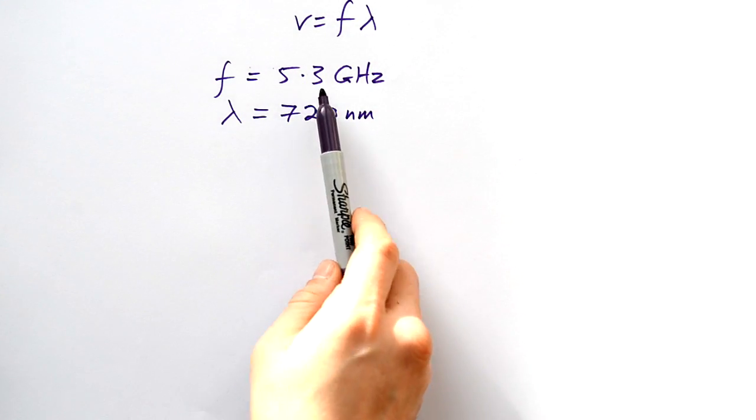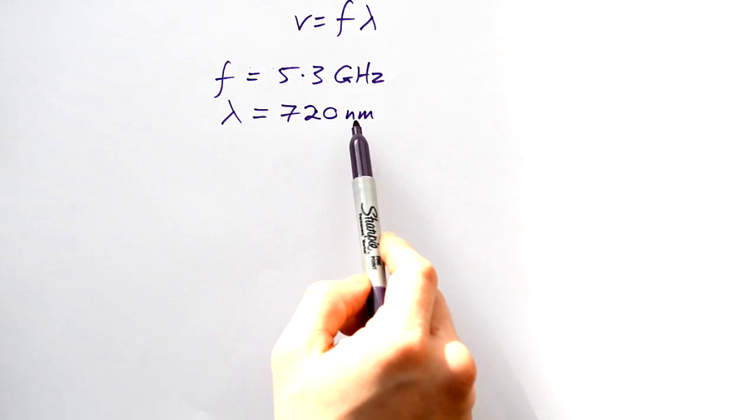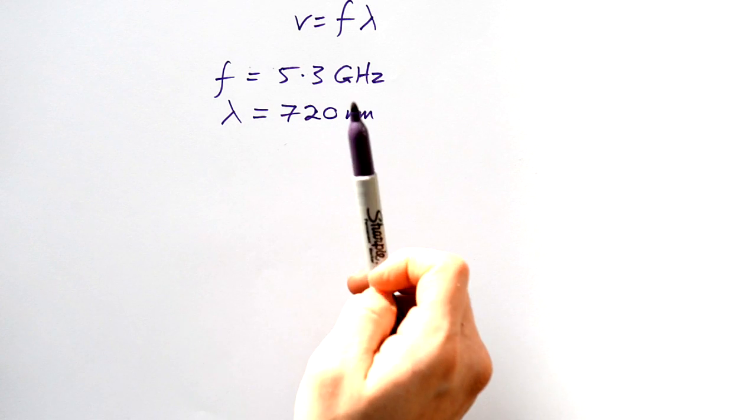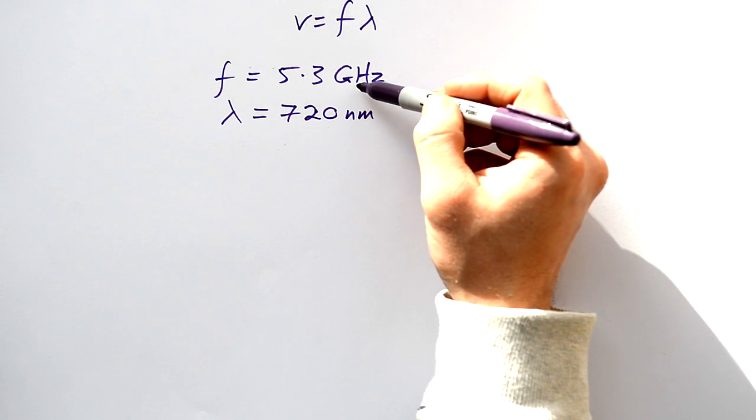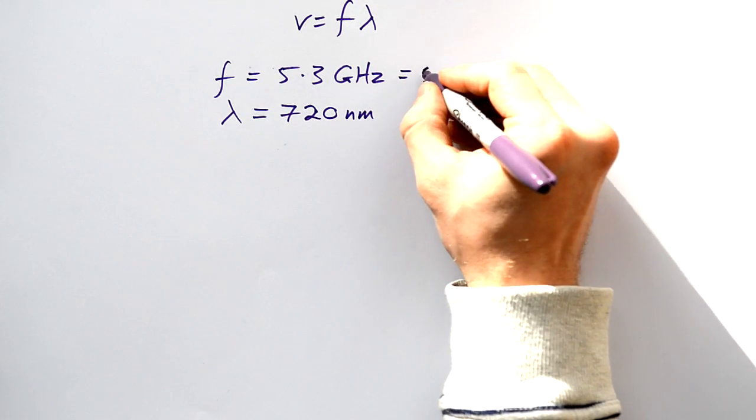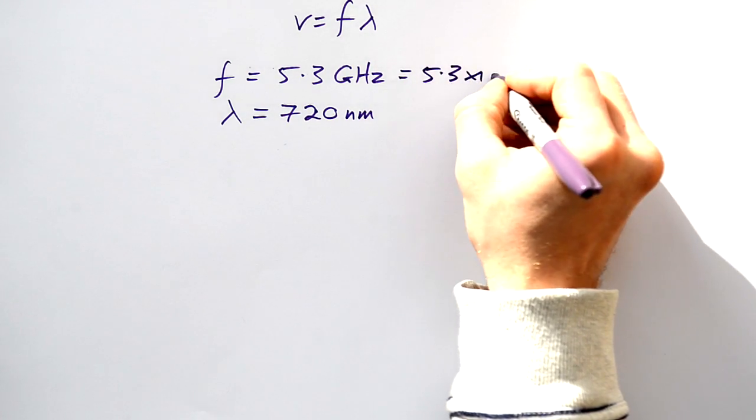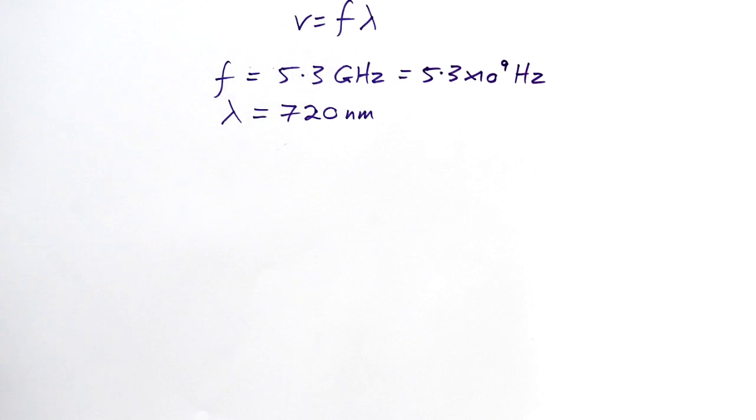Now I can't just times 5.3 and 720 together because we have these prefixes. All I have to figure out is what these prefixes mean in standard form. Then I can whack them in. Giga, we said, is a billion, so that's times 10 to the 9. So this is exactly the same as 5.3 times 10 to the 9 hertz. I've replaced my prefix with standard form.